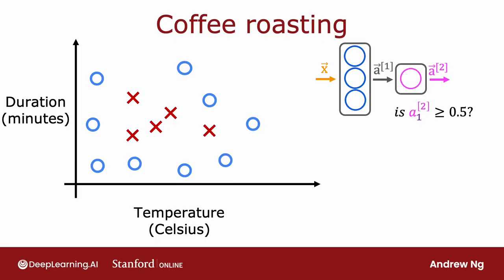In this video, let's take a look at how you can implement inference in code using TensorFlow. Let's dive in. One of the remarkable things about neural networks is the same algorithm can be applied to so many different applications. So in order, both for this video and in some of the labs, for you to see what a neural network is doing, I'm going to use another example to illustrate inference.